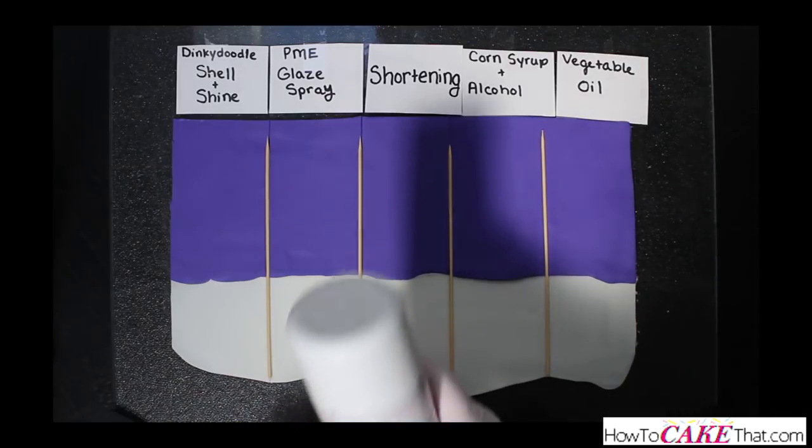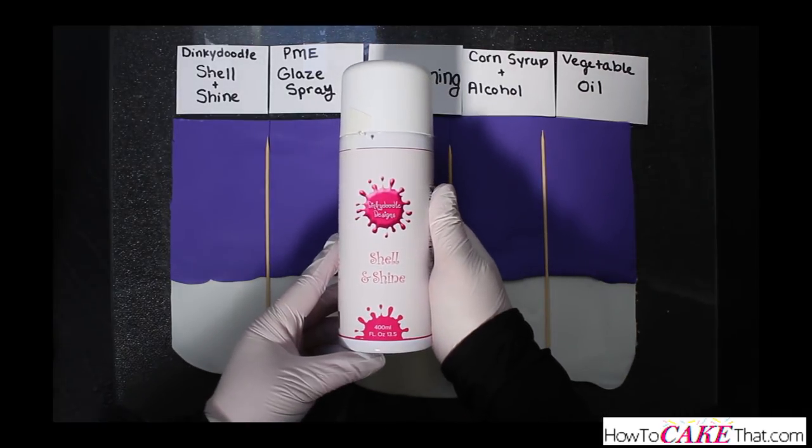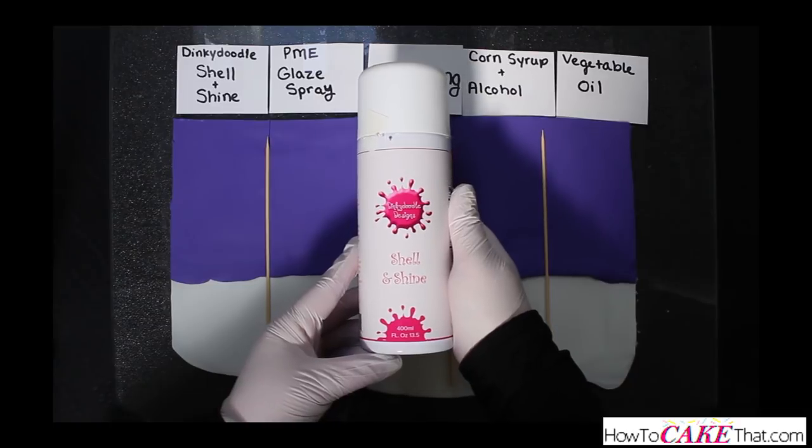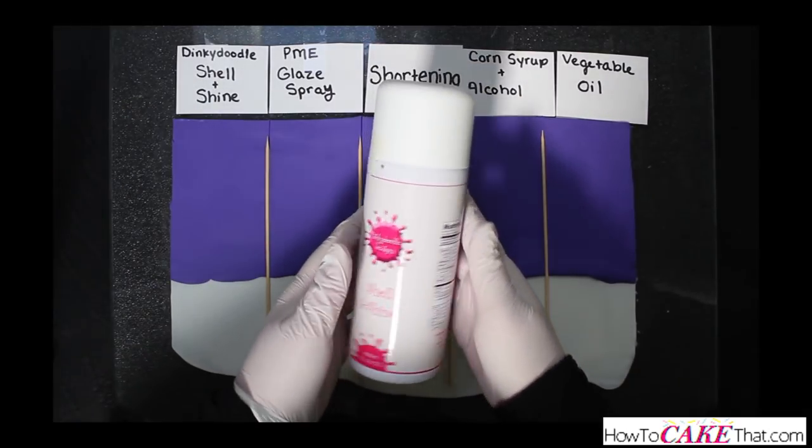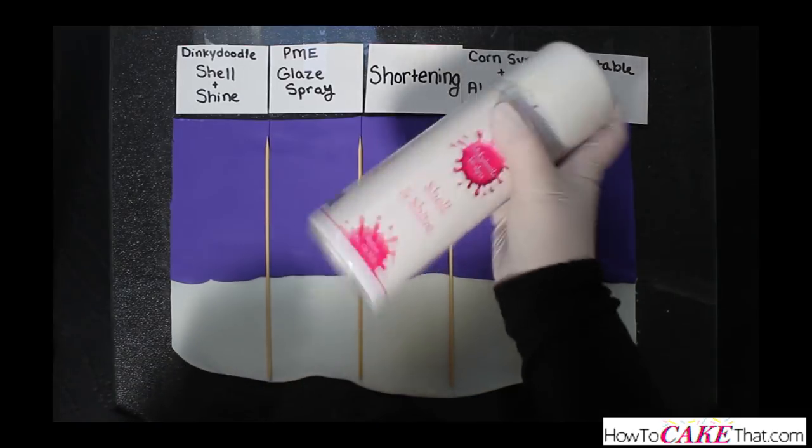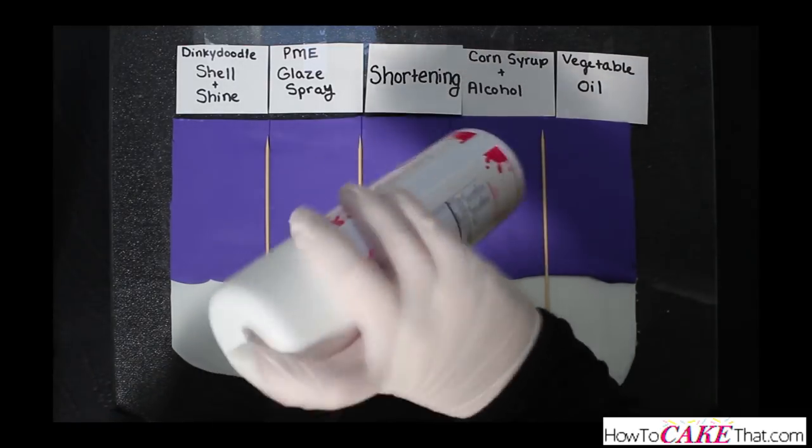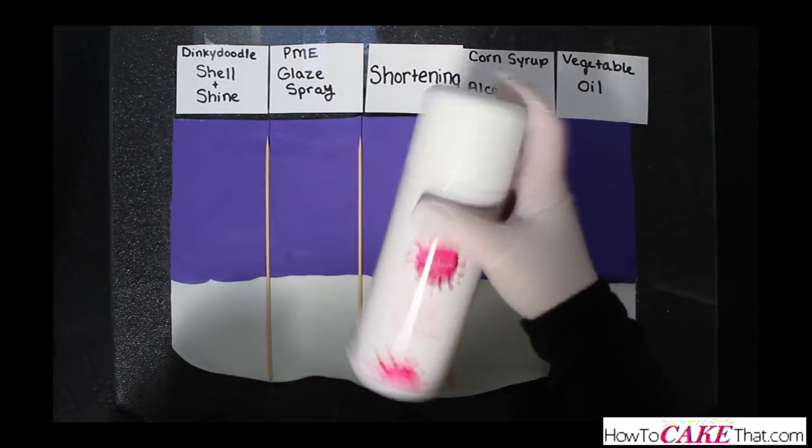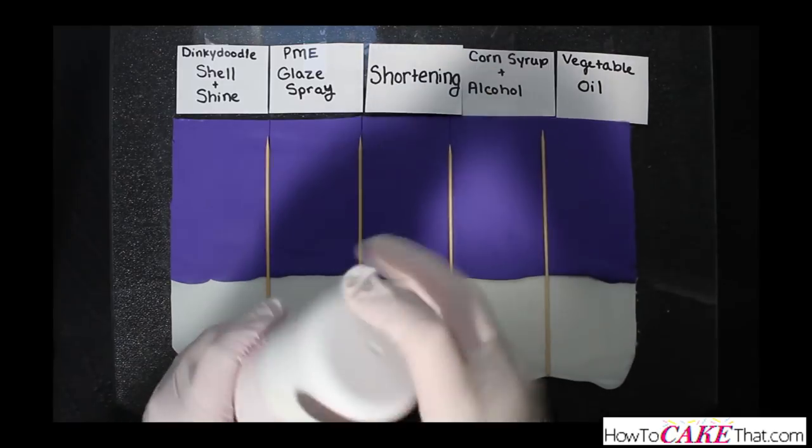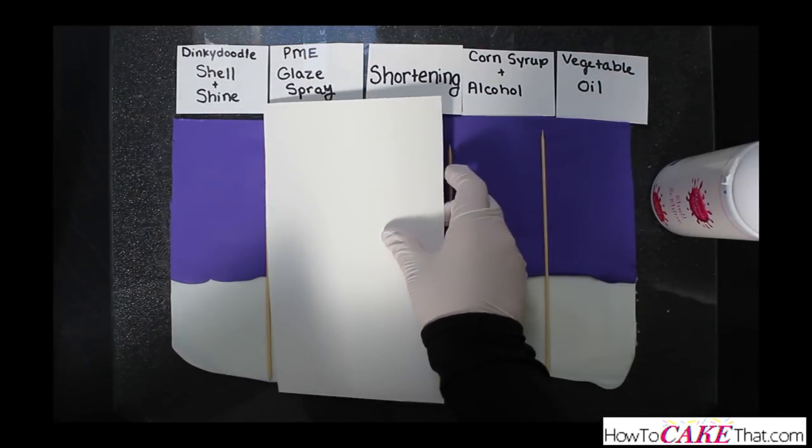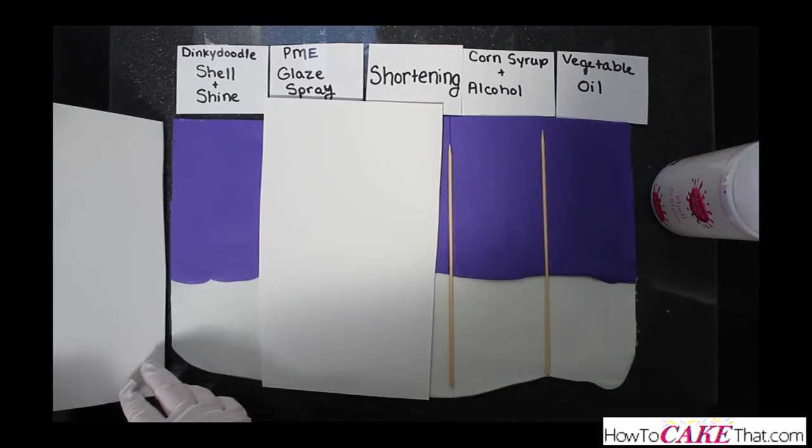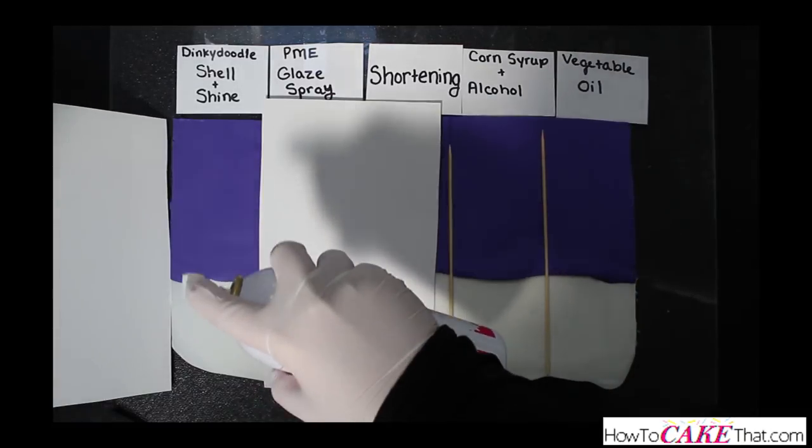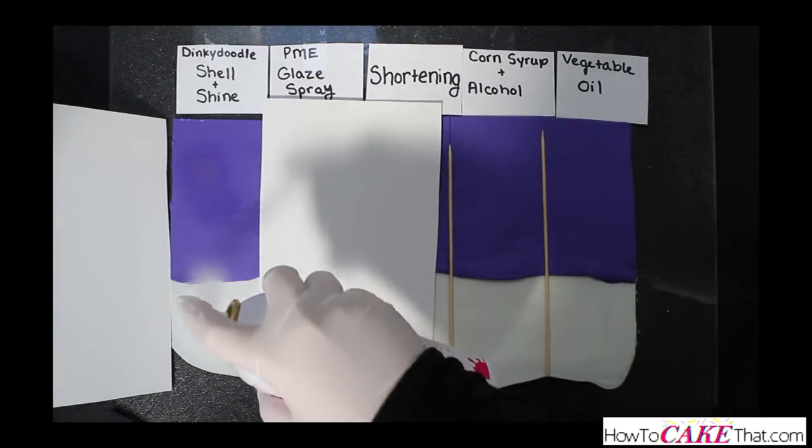The first product I am testing is Dinky Doodle Shell and Shine spray. I am super excited about this product because this is my very first time using it and I've heard some really great things about it. Before spraying it I gave it a really good shake, then I placed some cardboard over my fondant to protect it from the spray, then I sprayed my first coating onto the fondant.